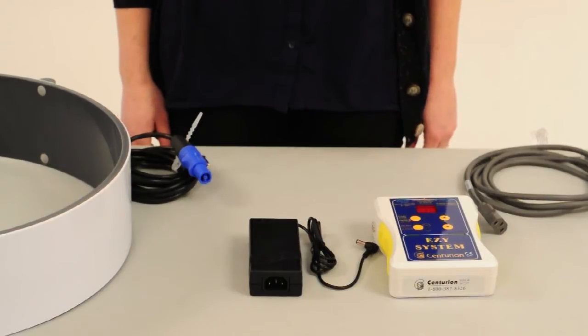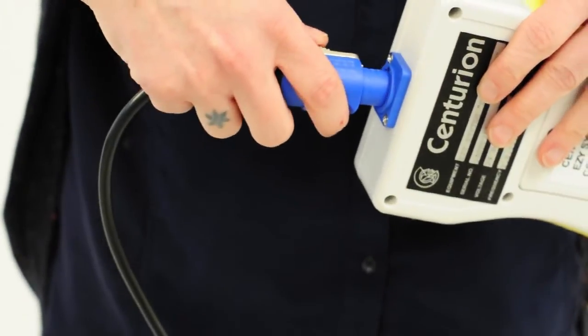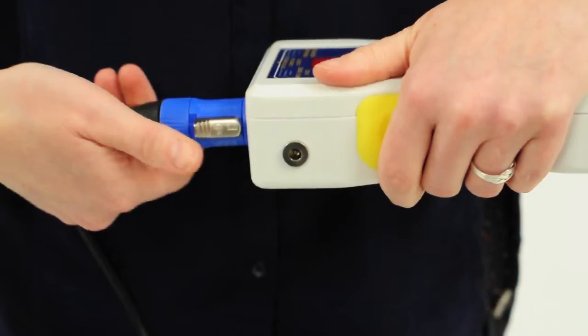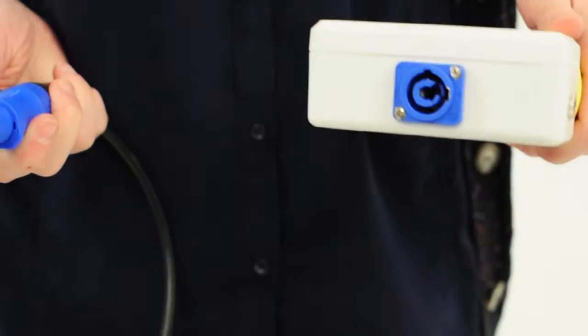To operate your EZ system, connect the cord on the coil to the EZ controller by inserting and twisting to lock. To unlock for storage, pull back the latch and twist in the opposite direction to remove.